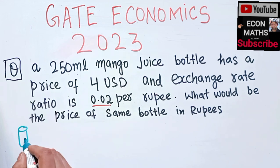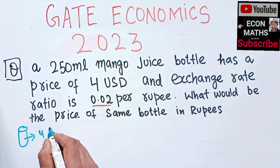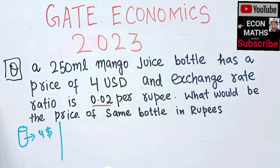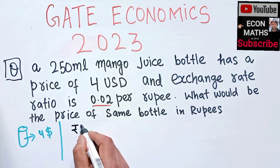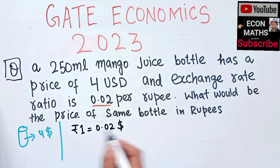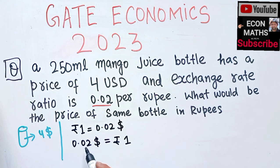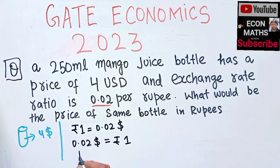So what we are given is a bottle of mango juice whose price is four US dollars. We need to calculate the price in Indian rupees given the exchange rate. The exchange rate is that one rupee is equal to 0.02 dollars. So we can write it as: 0.02 dollar is equal to one rupee.